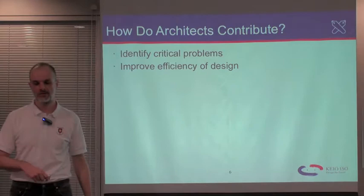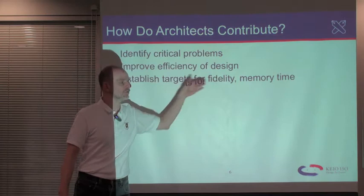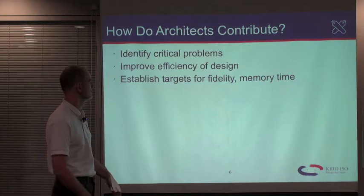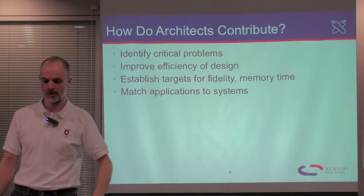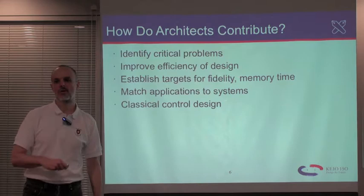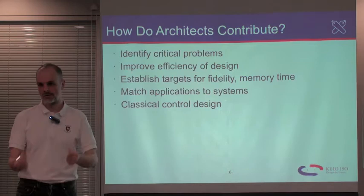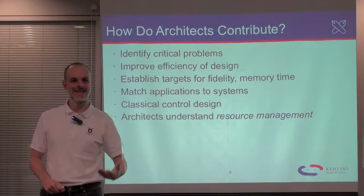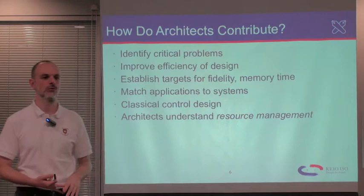In that process, we improve the efficiency of the design for various systems. This allows us to establish targets for the fidelity of quantum gate operations, the memory lifetime that's necessary — the T1, T2 for qubits. We can match the applications to the systems when we talk about workloads, and contribute also to the classical control design. That classical control design is one of the key factors that's going to determine how easy or hard it is to actually build a quantum computer that someone will pay you money for. Within this context, we also understand resource management — perhaps one of the key terms in all of systems architecture.